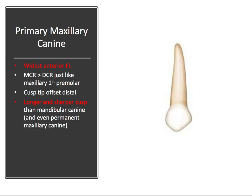Its mesial cusp ridge is greater than the distal cusp ridge in length — which is also true of the maxillary first premolar. The cusp tip, as a result of this difference in length, is offset to the distal. It also has a longer and sharper cusp than the mandibular canine and even its successor, the permanent maxillary canine.